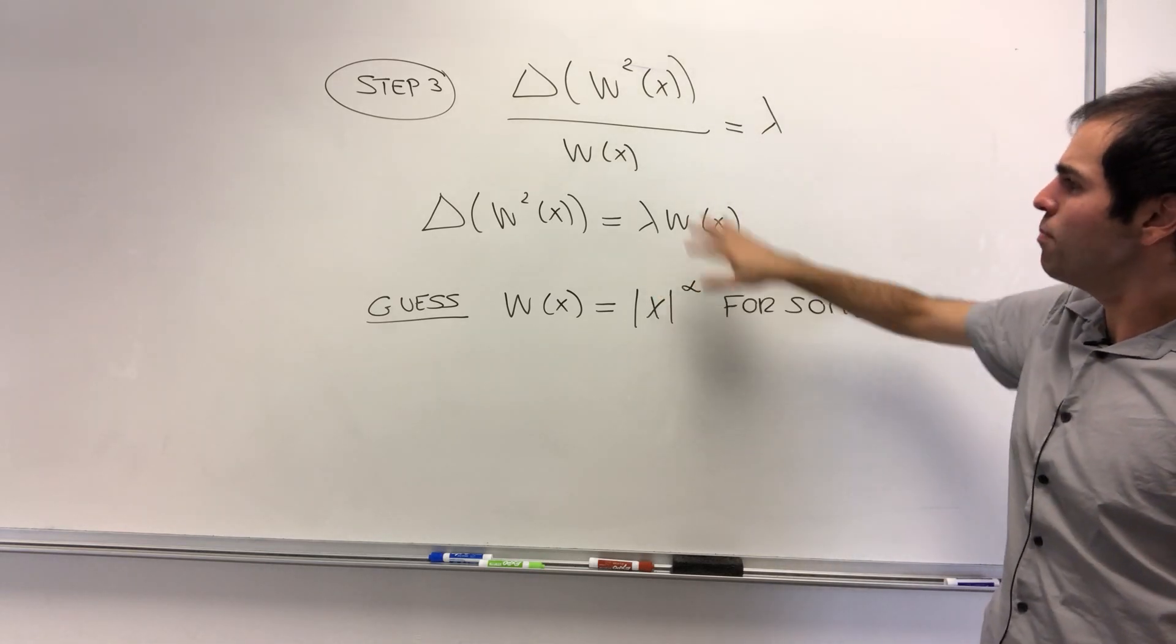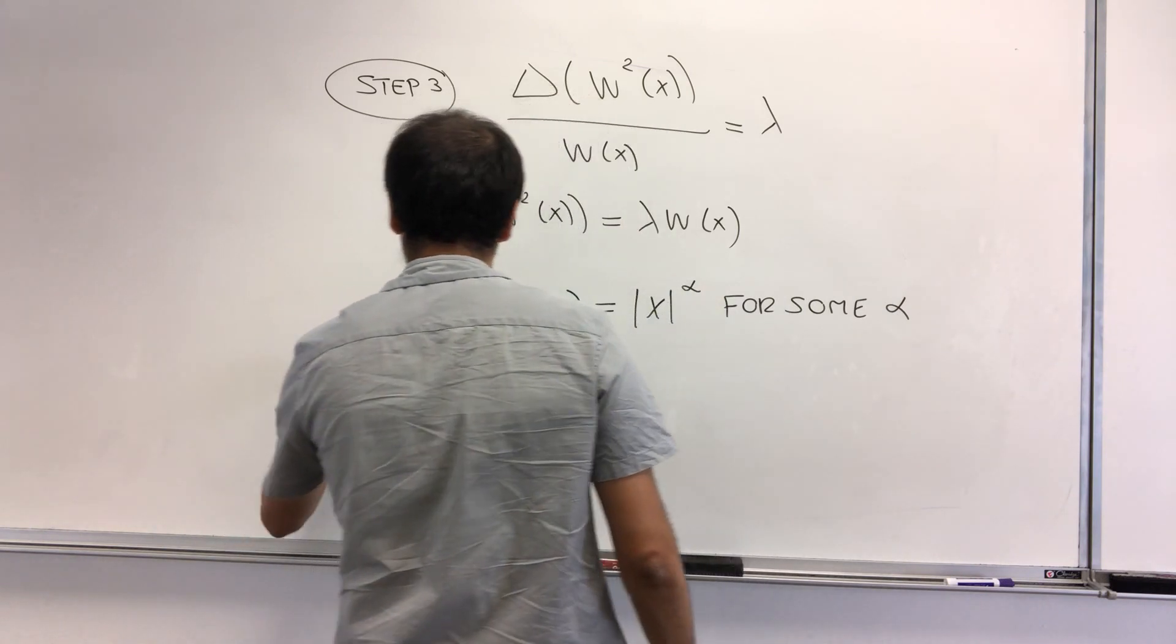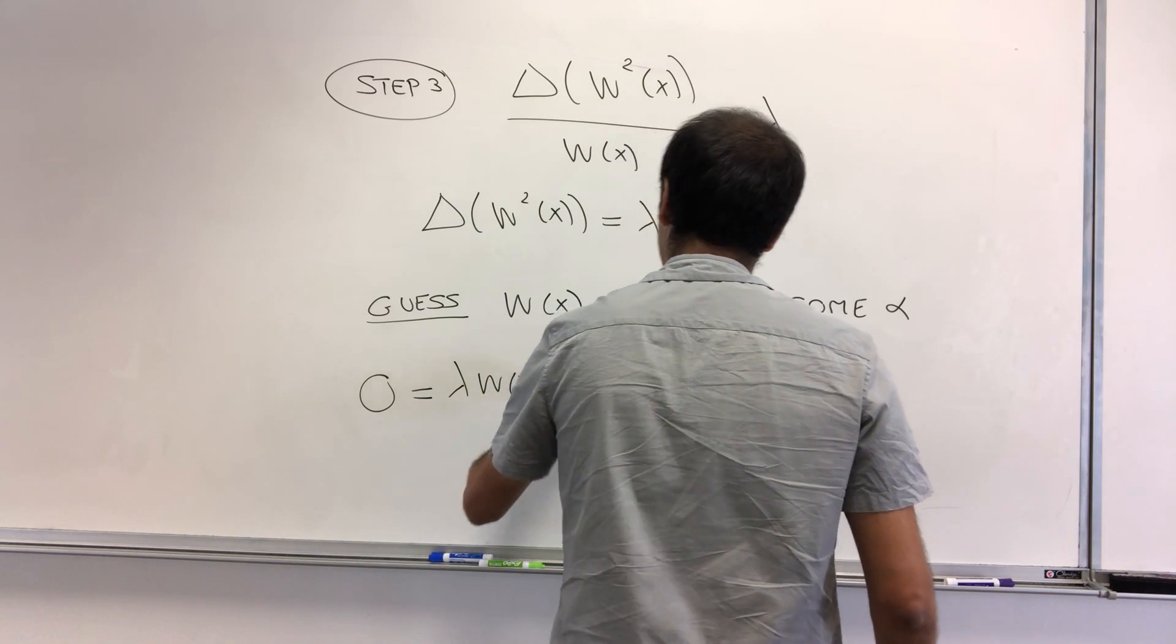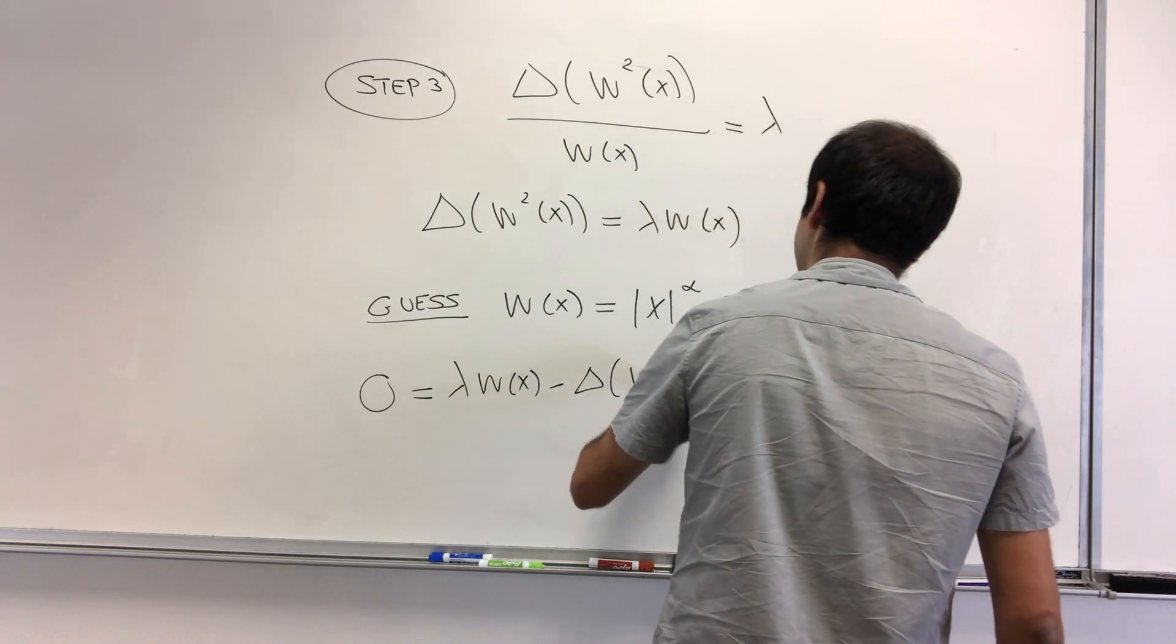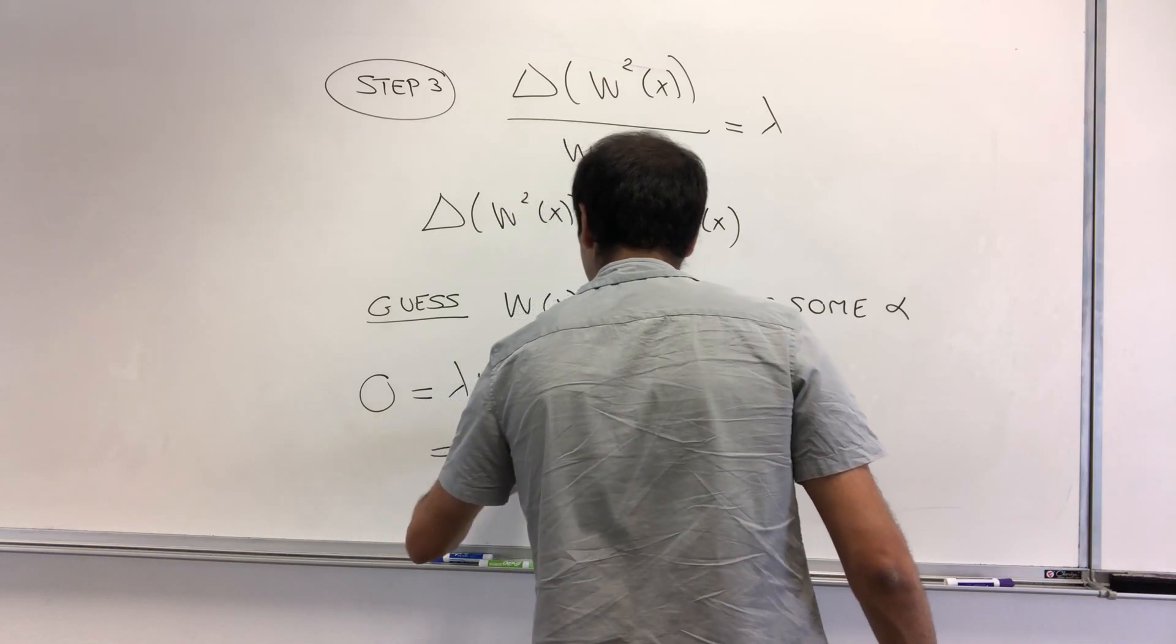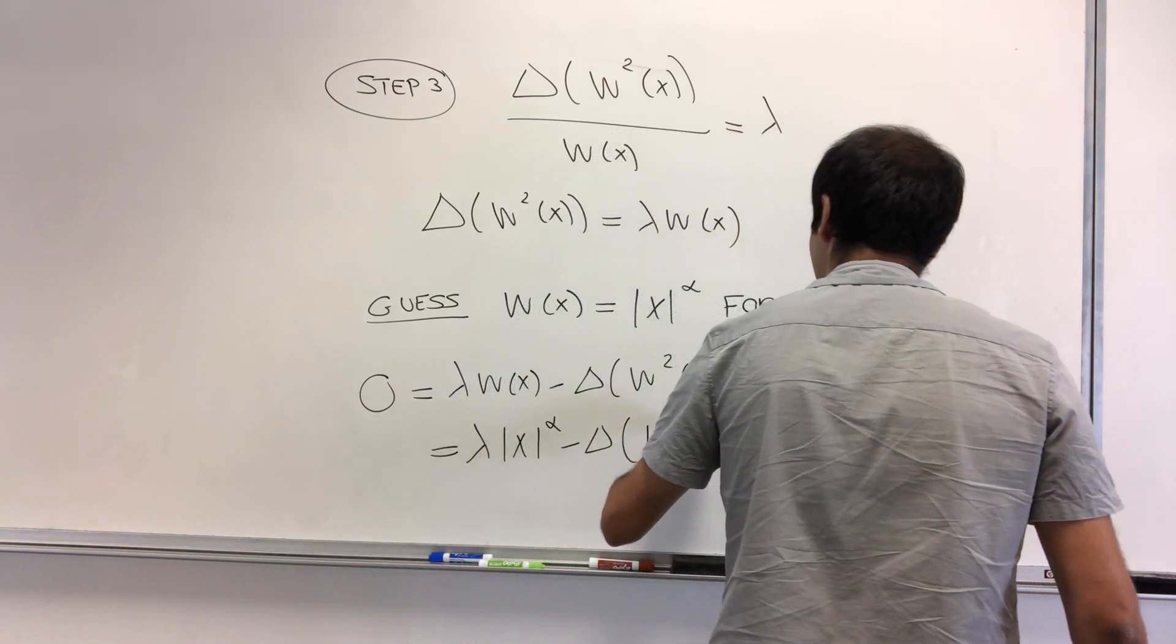All right, and then what happens if we plug this into this equation, we get zero equals lambda w of x minus Laplacian of w squared of x. Again, becomes lambda x to the alpha minus Laplacian of x to the 2 alpha.